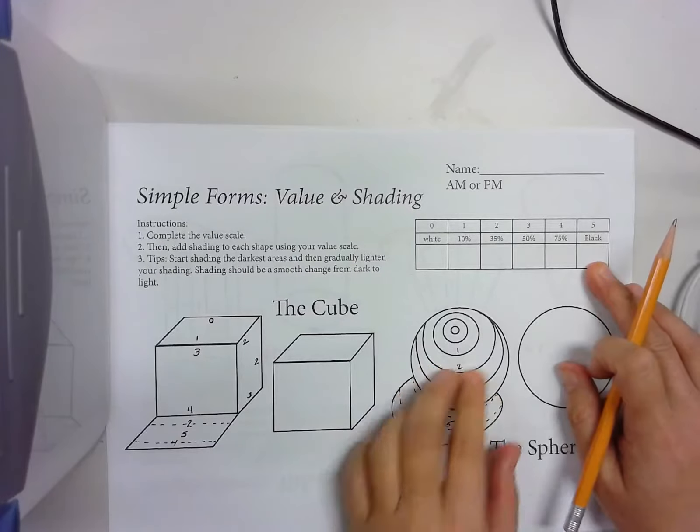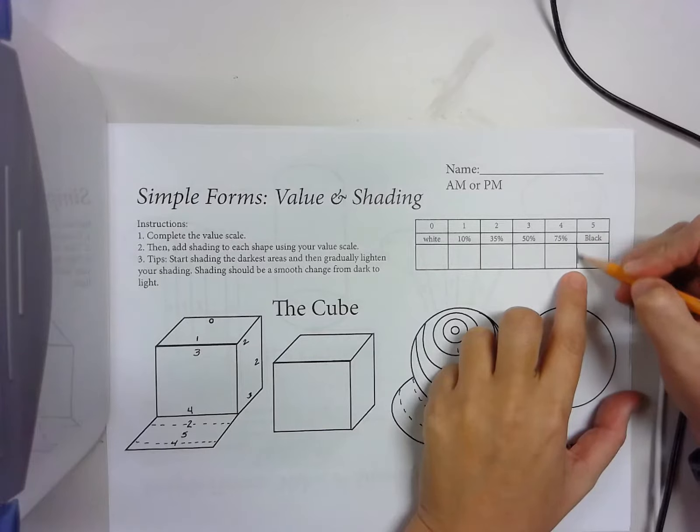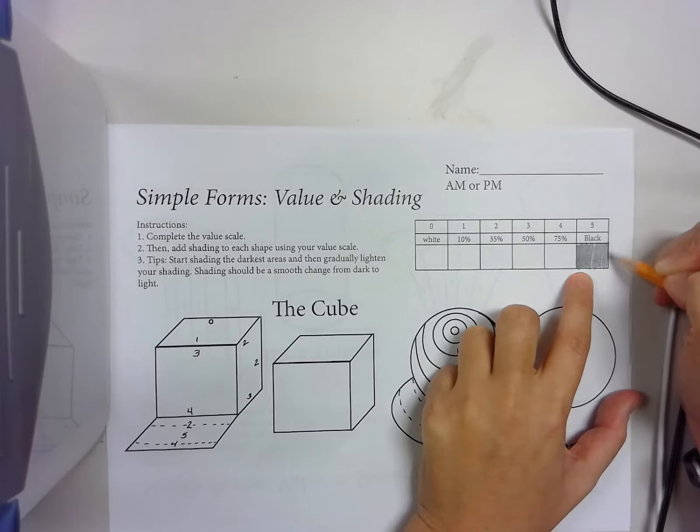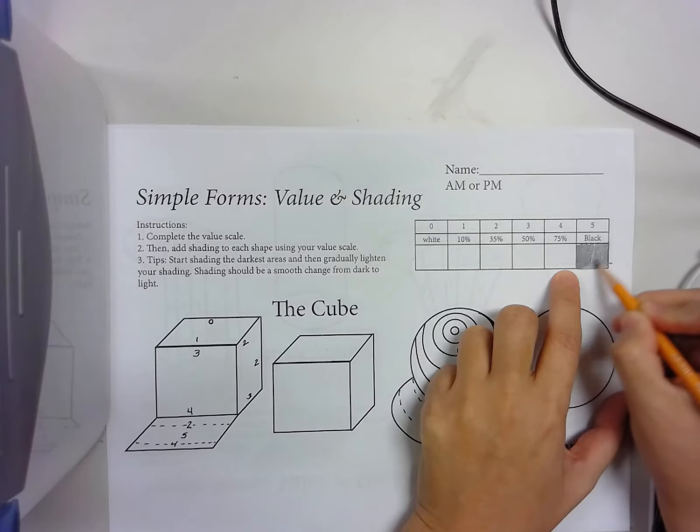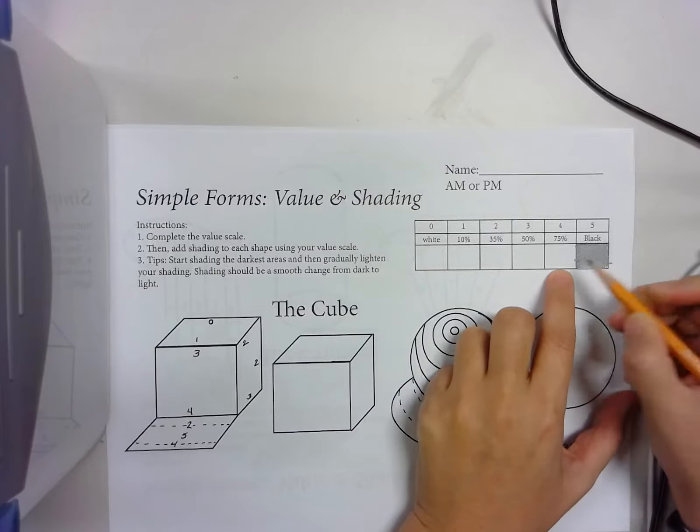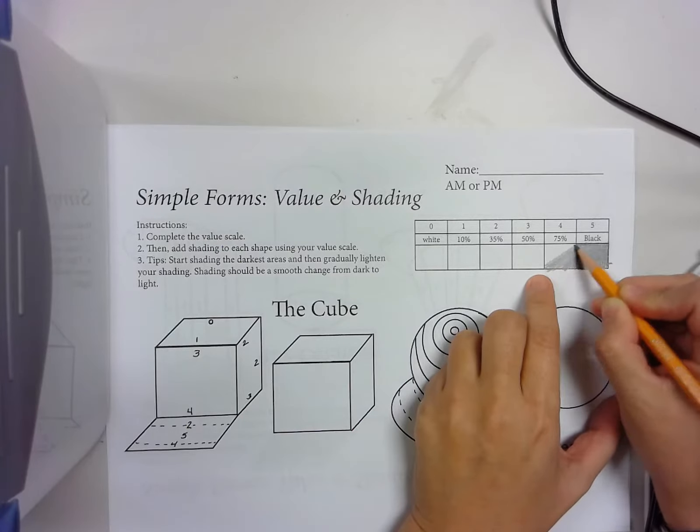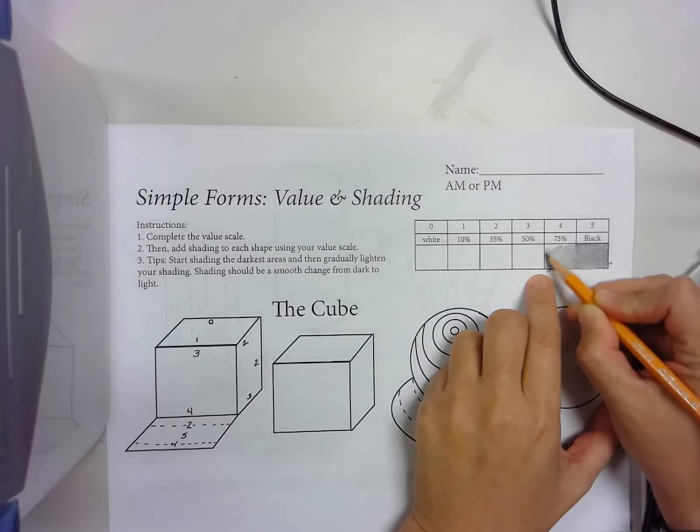You have a value scale that has been written out for you. You need to go in with your pencil and start doing the hardest amount of pressure because when you press harder, you're going to get a darker value with your pencil. Next one is 75, so I'm pressing like 75% the pressure now.